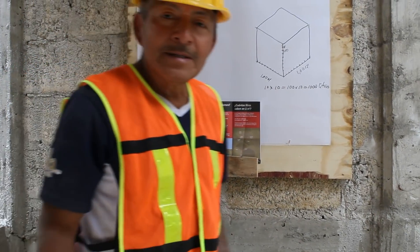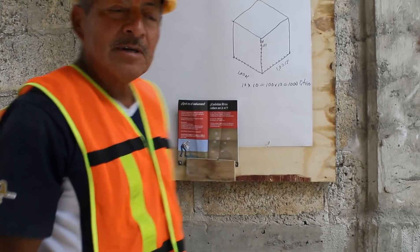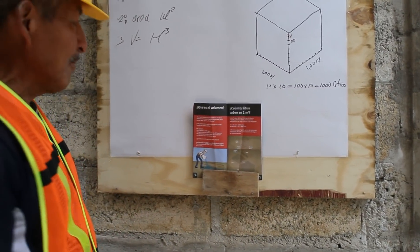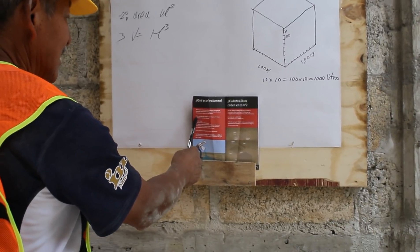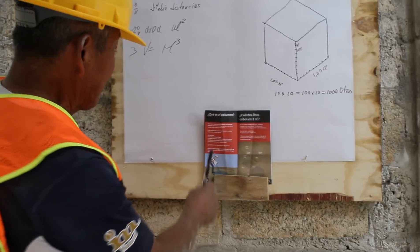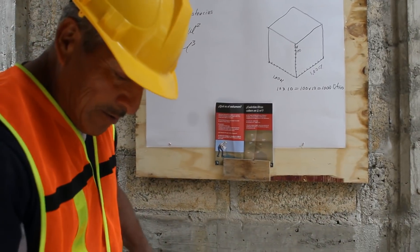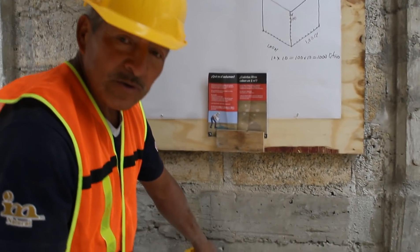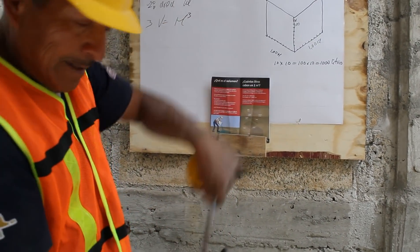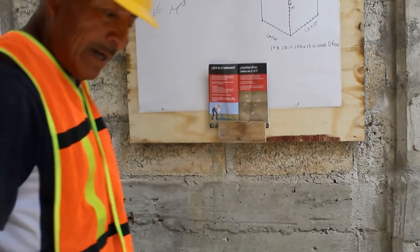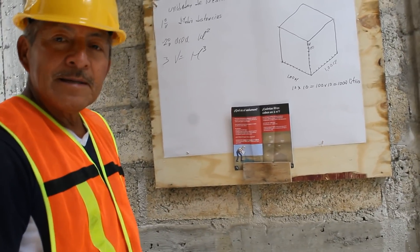Now, what is the volume? If I ask you what is the volume? Well, we don't know, but here we will learn what volume is. We have a cistern. The volume is the amount of space that a body has. The volume is measured in cubic meters. For example, I have a cistern of 3x2 with a height of 2 meters. The space in which the water sits is a body, and that body is measured in volume.